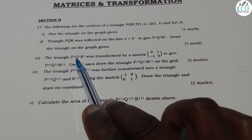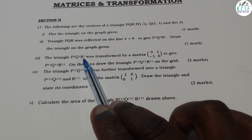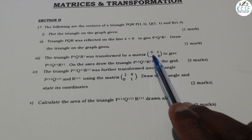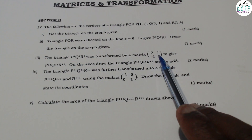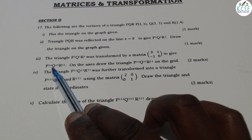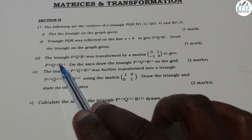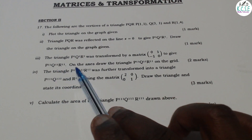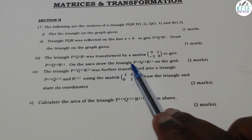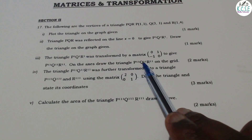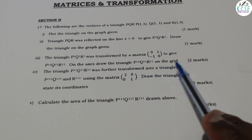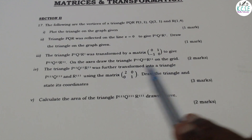Part 3: The triangle P1, Q1, R1 was transformed by the matrix [0, -1; 1, 0] to give P2, Q2, R2. Draw the triangle P2, Q2, R2 on the grid.